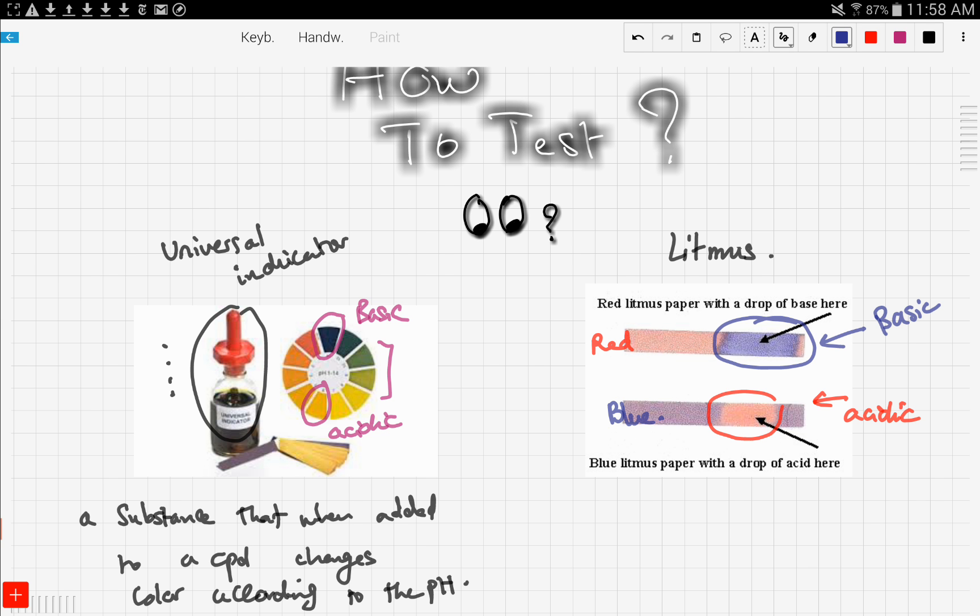We said that the universal indicator is a substance that when added to a compound or a chemical, it changes color. And according to that color, we can know the pH from the scale right here. And we talked about litmus paper, and we said there are two types of litmus paper, the red litmus and the blue litmus. And we said if the red litmus paper turns blue, it means the compound or the solution is basic. If the blue litmus turned red, it means that the compound or the solution is acidic.